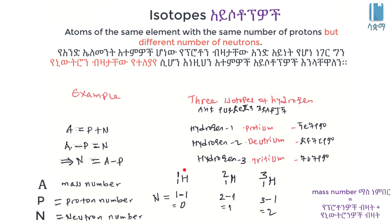Neutron is the source of hydrogen isotopes. The number of neutrons is zero in the first hydrogen isotope, and increases in the second. Isotopes are atoms of the same element with the same number of protons and atomic number but a different number of neutrons and different mass number.